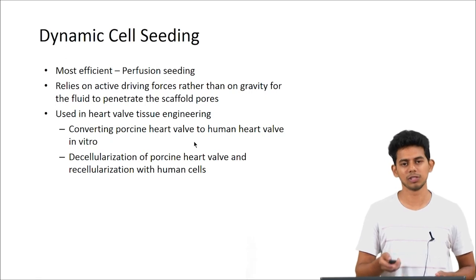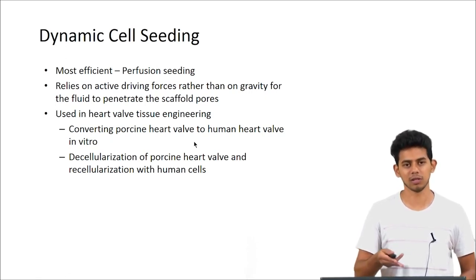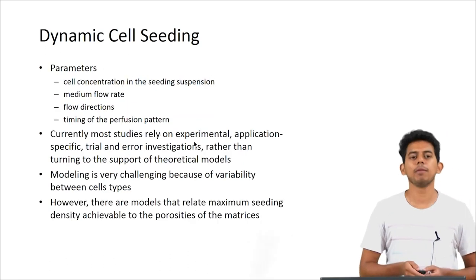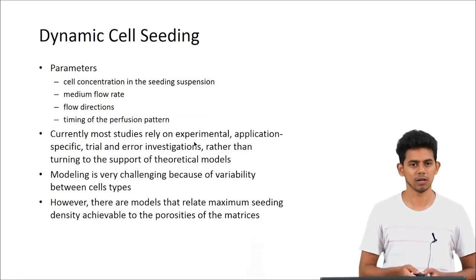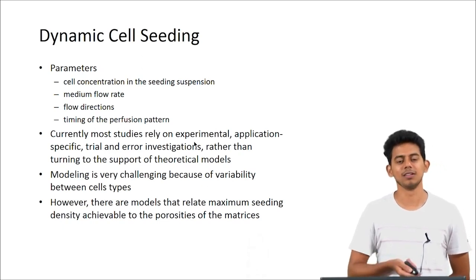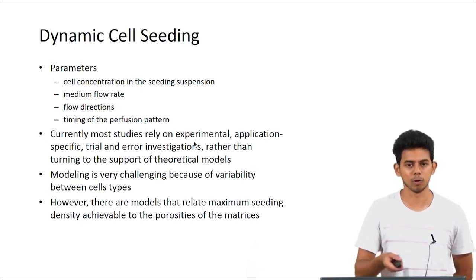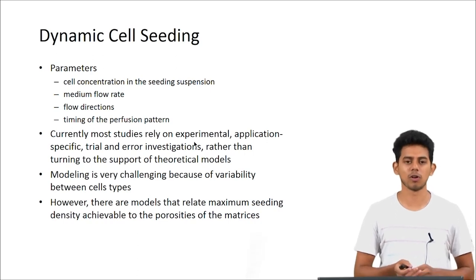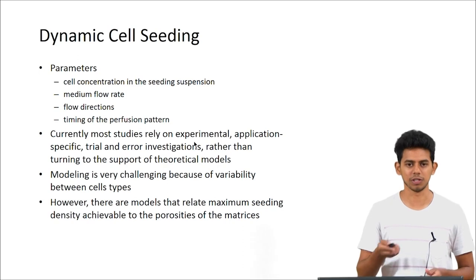Amongst the dynamic cell seeding techniques, the most efficient one is perfusion seeding, wherein it relies on active perfusion rather than using gravity for seeding the cells onto the scaffold. It can penetrate throughout the scaffold and in a uniform fashion the cells can be seeded. It has been actually used in converting a porcine heart valve by decellularizing it and recellularizing it with human cells by perfusion. The main parameters which determine how the cells are seeded are the cell concentration you use for your seeding, the flow rate of the medium, the flow direction and timing of perfusion pattern. Currently what is used is a trial and error approach in determining what are the best parameters that need to be used to achieve the best seeding. Modeling is quite challenging because each cell type can have a lot of variability. Still, there are models which can help us achieve maximum seeding density based on the porosity of the matrices.